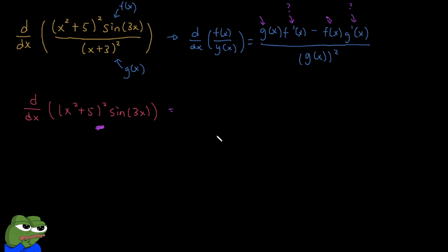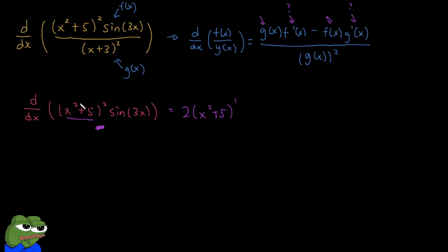First, we take the derivative of the first function, which would be 2 times (x² + 5) raised to the 1st power. By power rule, we bring the exponent down and subtract 1. Then we chain rule it because there's another function inside, so we multiply by the derivative of the inside. By power rule again, we bring down the 2, subtract 1, giving us 2x, and the constant goes to 0.